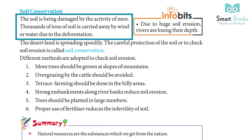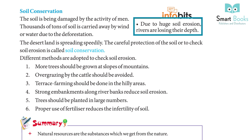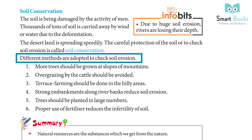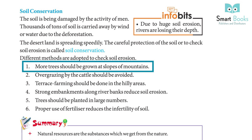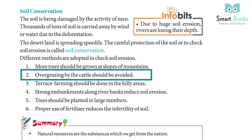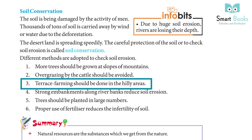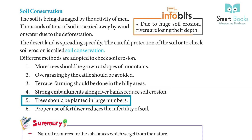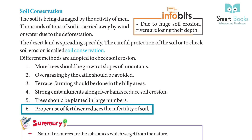The soil is being damaged by the activity of man. Thousands of tons of soil are carried away by wind or water due to deforestation, and due to huge soil erosion, rivers are losing their depth and desert land is spreading speedily. The careful protection of soil, or checking soil erosion, is called soil conservation. Different methods are adopted: 1. More trees should be grown at slopes of mountains. 2. Overgrazing by cattle should be avoided. 3. Terrace farming should be done in hilly areas. 4. Strong embankments along river banks reduce soil erosion. 5. Trees should be planted in large numbers. 6. Proper use of fertilizers reduces the infertility of soil.